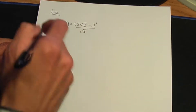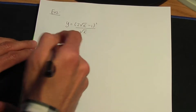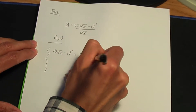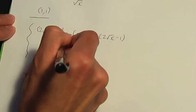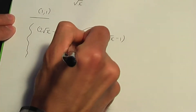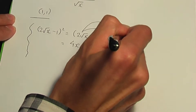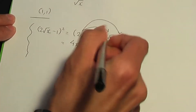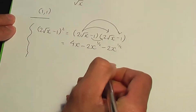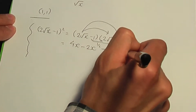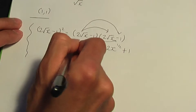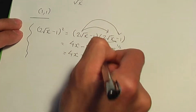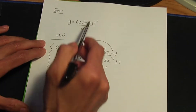First let's work out dy/dx. Let me first expand the brackets in the numerator. So I have (2√x - 1)², which is (2√x - 1) into another (2√x - 1). 2√x times 2√x is 4x; 2√x times -1 is -2x^(1/2); -1 times 2√x is -2x^(1/2); and -1 times -1 is +1. Adding like terms gives 4x - 4x^(1/2) + 1.